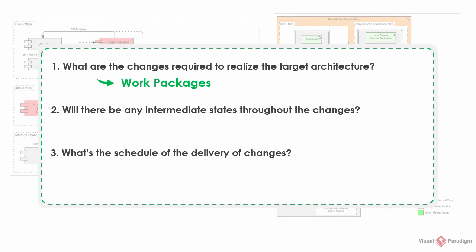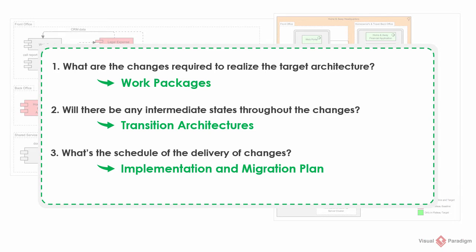These questions should be answered in Phase E by identifying the following. Work packages, which are groups of related changes within the project. Transition architectures, which are the possible intermediate situations between the baseline architecture and the target architecture. And the implementation and migration plan, which provides a schedule for implementation of the solution described by a transition architecture.